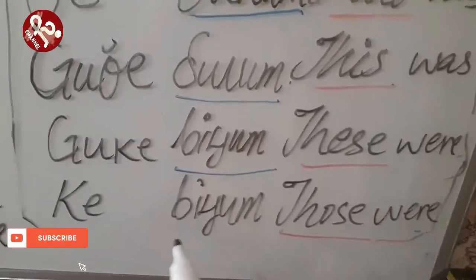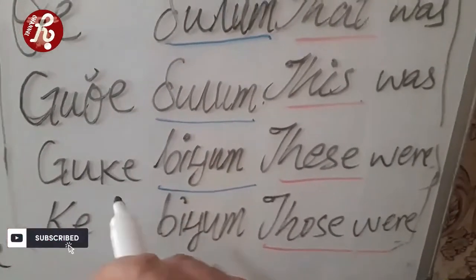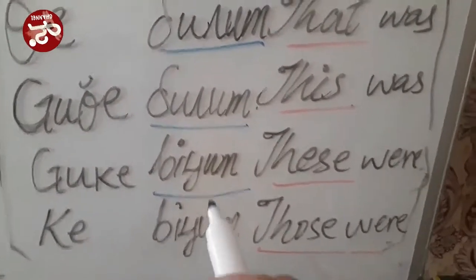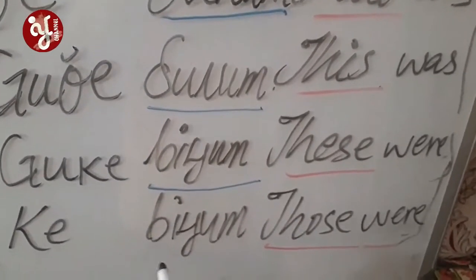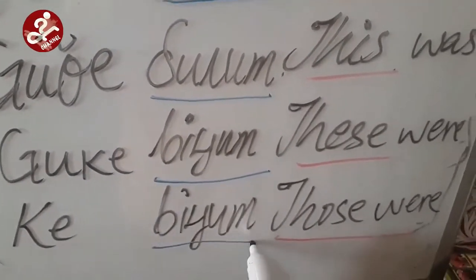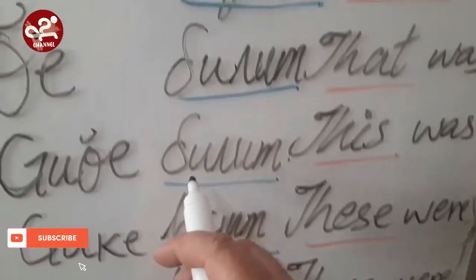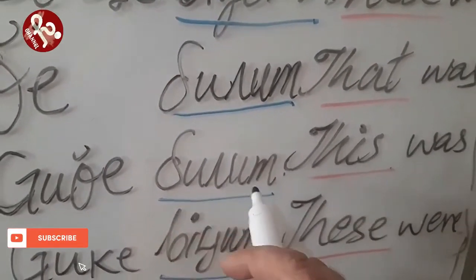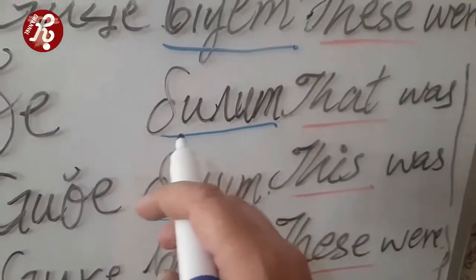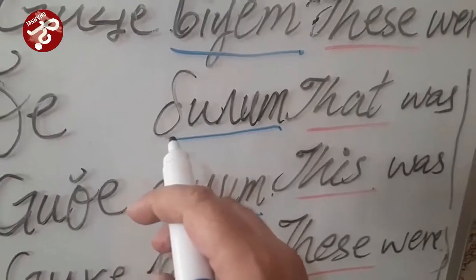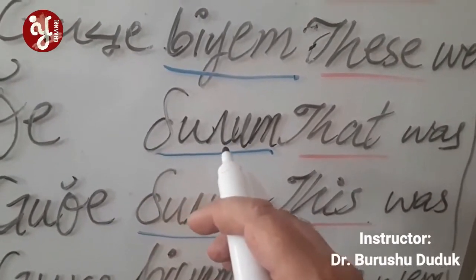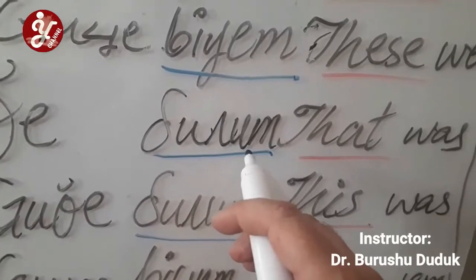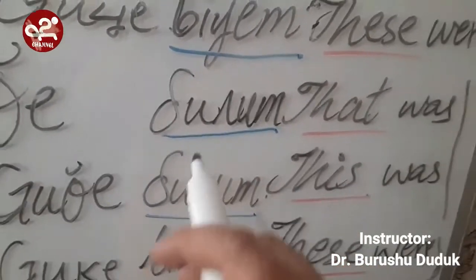Ke Bichum and Guke Ke — you will use Bichum for plural, and for singular you will use Dulum. So Dulum is the singular form and Bichum is the plural form for fluid or soft/uncountable non-living things.